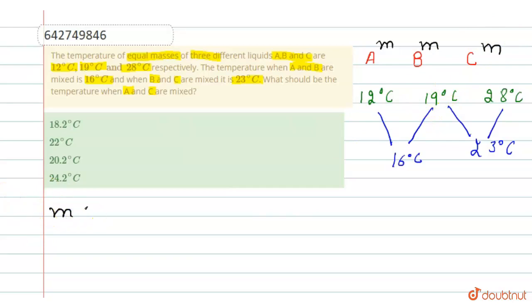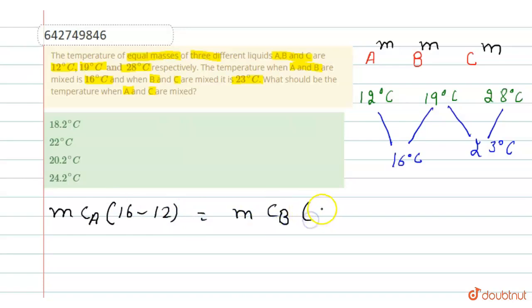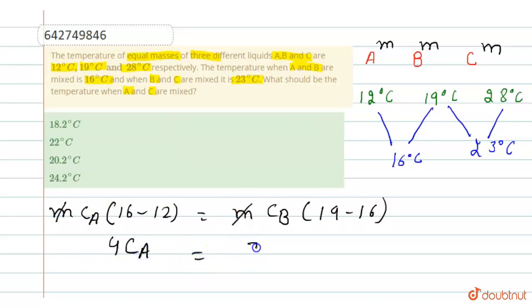For A and B, we write the equation: m is the mass, Ca is the specific heat, and the difference of temperature is 16 minus 12. This equals m times Cb times 19 minus 16. The m cancels, and we get 4·Ca = 3·Cb.